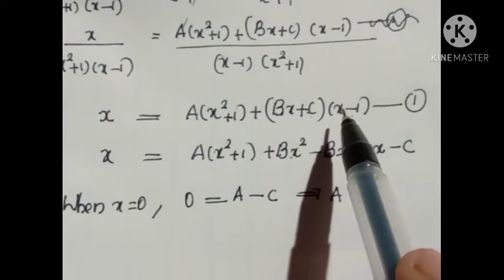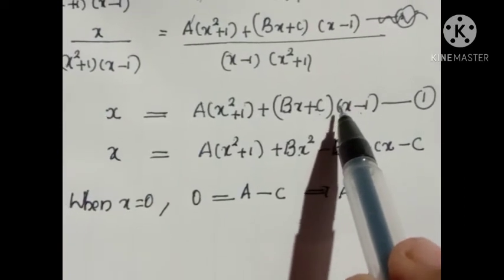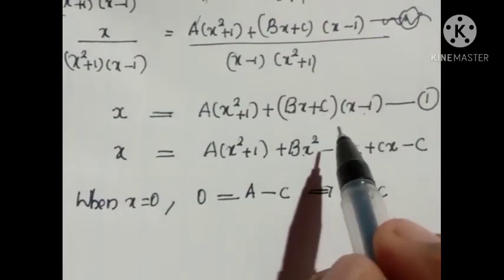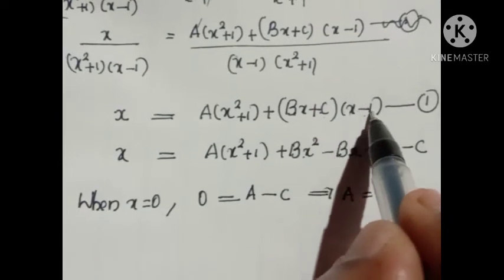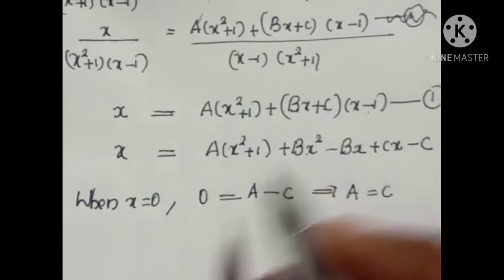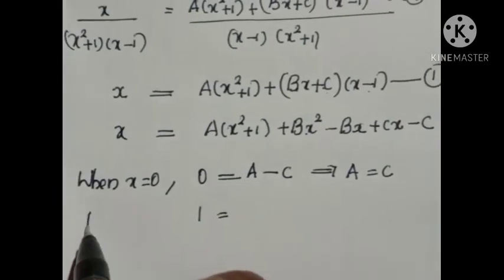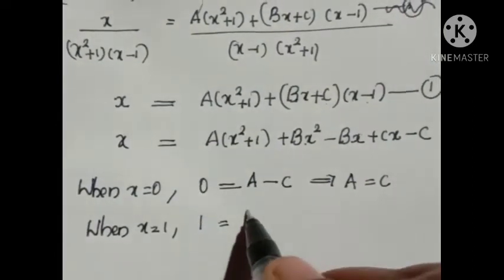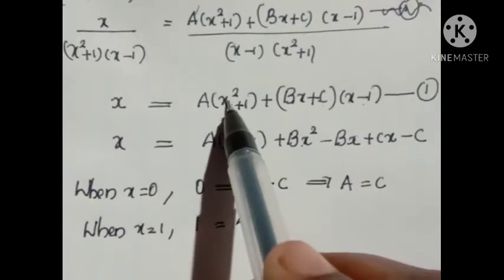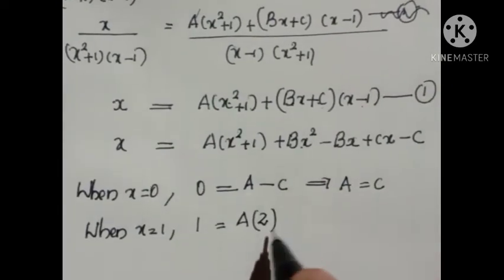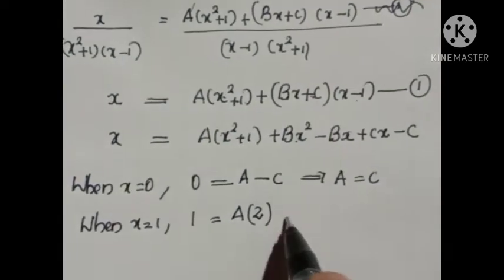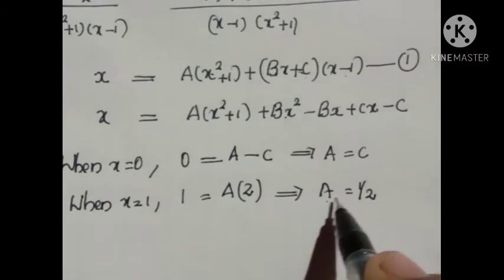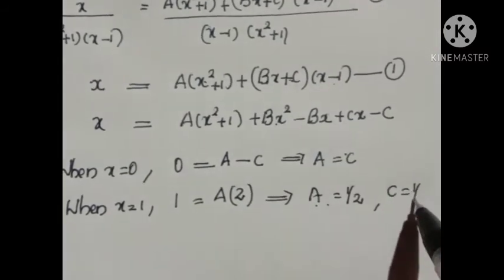When we put x = 1, the term (Bx + C)(x − 1) becomes zero. Left side is 1. So 1 = A(1² + 1) = A × 2, giving 2A = 1, or A = 1/2. Since A = C, then C is also 1/2.